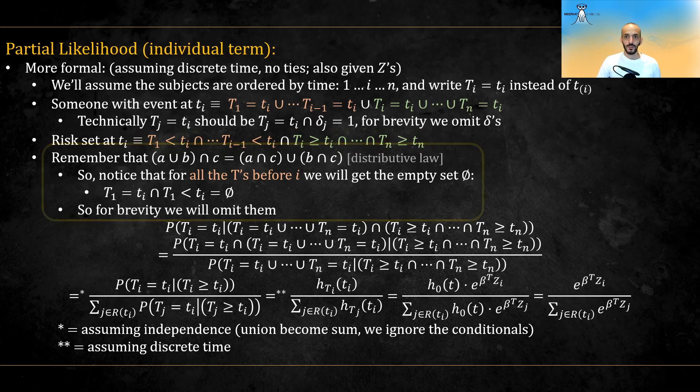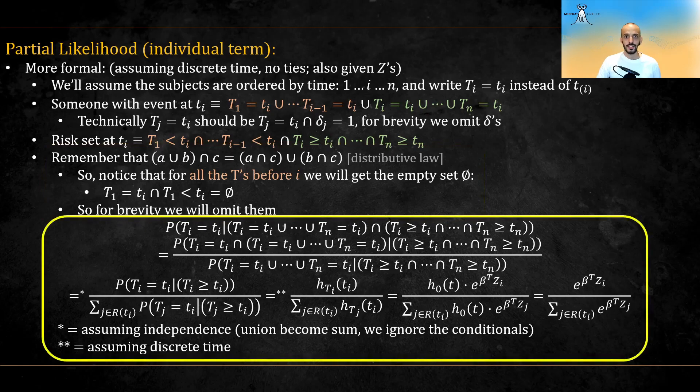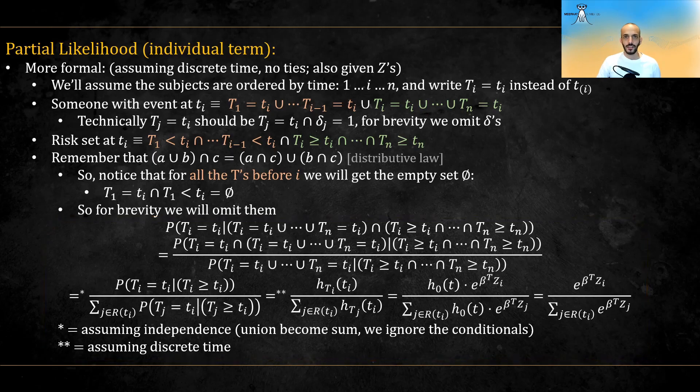Writing the same derivation as before becomes this, where in the first star, we use the independence to ignore the condition on anything but the current variable, and we make the probability of a union as sum of probabilities, and in the second star, we assume discrete time. You can pause the video to verify for yourself.